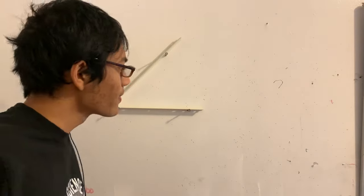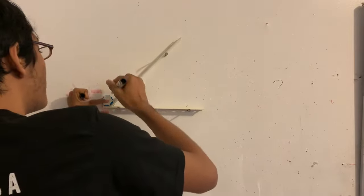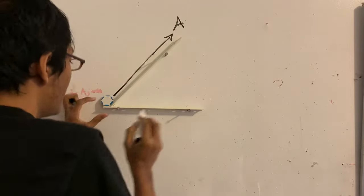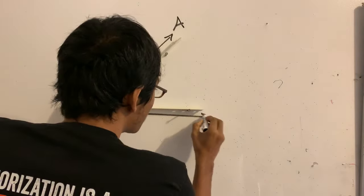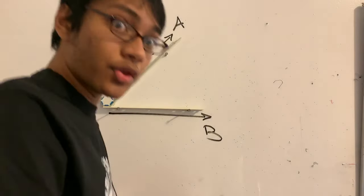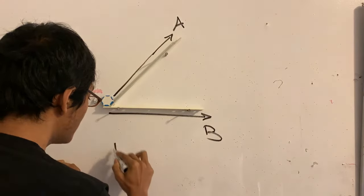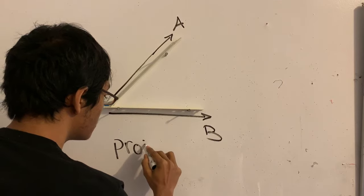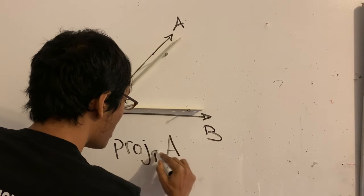Now, here's the thing. I want to find the projection of my first vector and I want to find the projection of that vector A onto my second vector B. In other words, I want to find the proj of my vector A onto vector B.